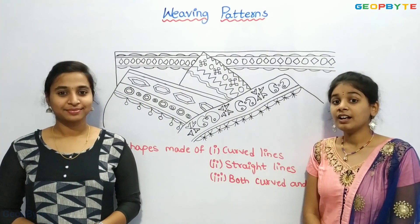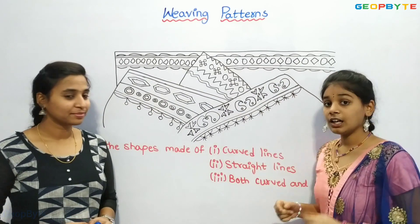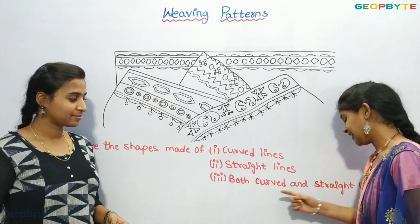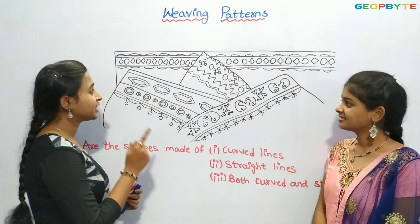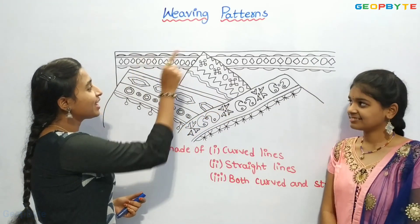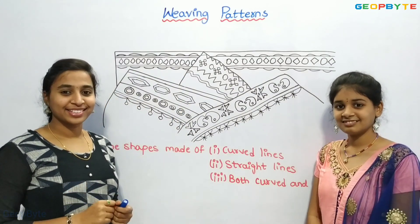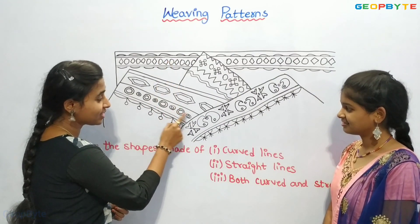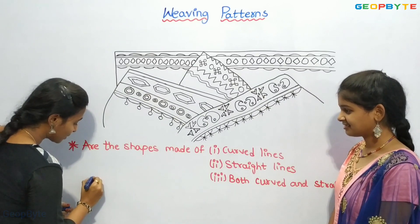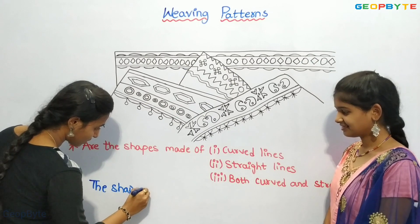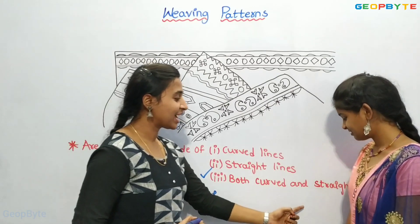Are the shapes made of curved lines or straight lines or both? In these patterns, we have shapes made of both. Parallelograms, squares, and hexagons are made of straight lines. Circles and mango-shaped patterns are made of curves. So the shapes are made of both curved and straight lines.